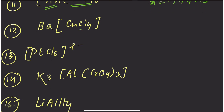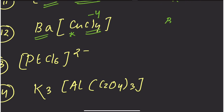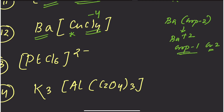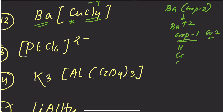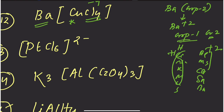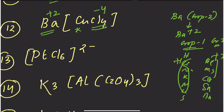For BaCl₄ complex: the ligand charge is −4. Barium is a group 2 s-block element with charge +2. Group 1 elements (H, Li, Na, K, Rb, Cs, Fr) have +1 charge; group 2 elements (Mg, Ca, Ba) have +2 charge. Barium is +2, so total is −4 + 2 = −2, meaning the metal (copper) oxidation state is +2. For PtCl₆²⁻: 6 Cl⁻ = −6; with overall charge −2, Pt = +4.